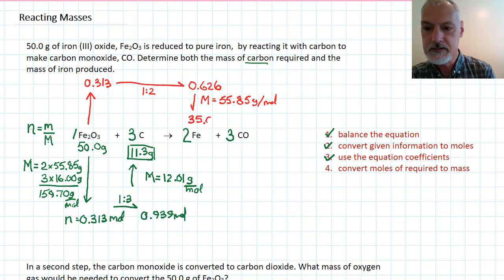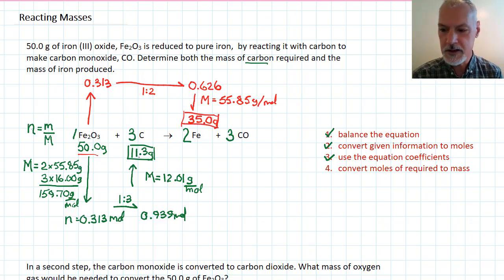I'm rounding my answer off to two significant digits, because my starting information had three significant digits. That's why my final answer should also have three. So, that would be the mass of iron I produce. Here, the mass of carbon I would require.